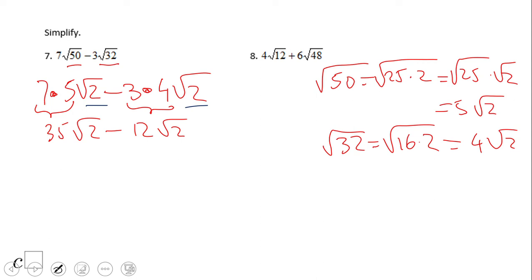35√2 - 12√2 = 23√2. So don't forget, if you need to simplify expressions like this, check first if they are alike. They might be alike.